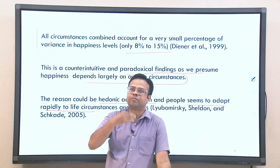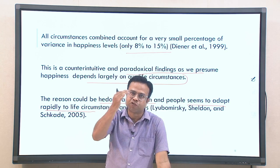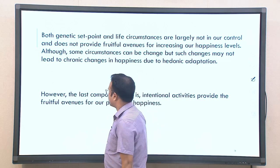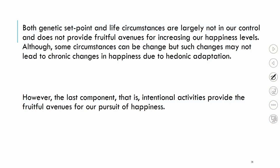Adaptation is one of the hindrances to sustainable happiness. Both genetic set point and life circumstances are largely not in our control — genetics came through generations and we have little control over it; life circumstances are incidental and stable. However, the third factor — intentional activities — is the active component where we do have control. According to the model, intentional activities contribute around 40 percent and offer the greatest avenues for the pursuit of happiness.